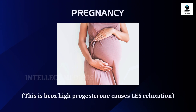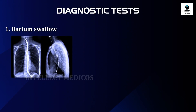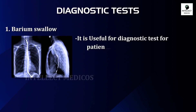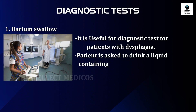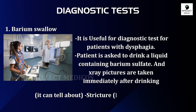Now, the diagnostic tests. First is the barium swallow test. It is the first diagnostic test for patients with dysphagia. The patient is asked to drink a liquid containing barium sulfate, and X-ray pictures are taken immediately after drinking. It can reveal stricture, any mass, or hiatal hernia.